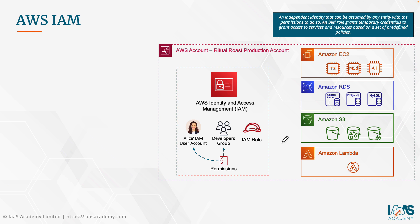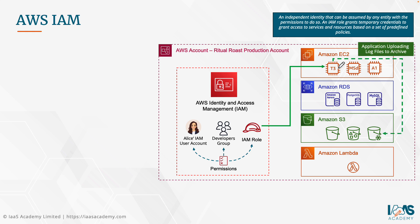Those entities don't need to be only human IAM users. For example, if you have an application running on an EC2 instance that needs to update an Amazon S3 bucket with log files, you'd use an IAM role. The IAM role lets you attach a set of permissions enabling the EC2 instance to perform the put operation against S3. You attach the IAM role to the EC2 instance, and it can then connect to the Amazon S3 bucket and upload the log files to the archive bucket.